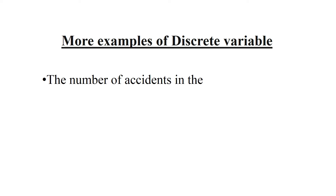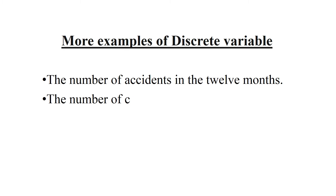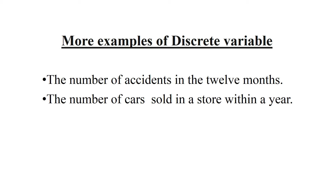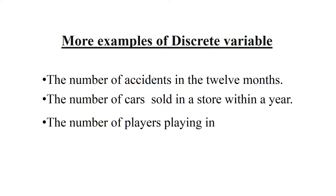Some examples of discrete variables: the number of accidents in 12 months can be 100 or 1,000, but never 300.26 or 1000.16. The number of cars sold in a store within a year will always be a whole number — perhaps 500 or 400. Similarly, the number of players in a tournament will always be a whole number.